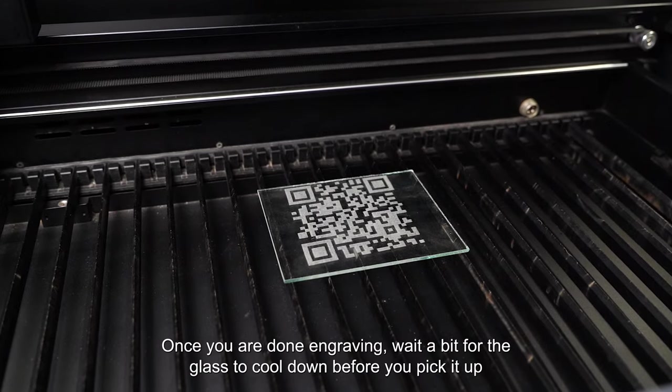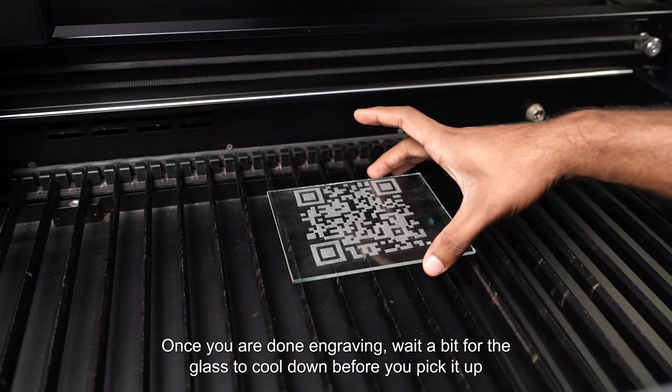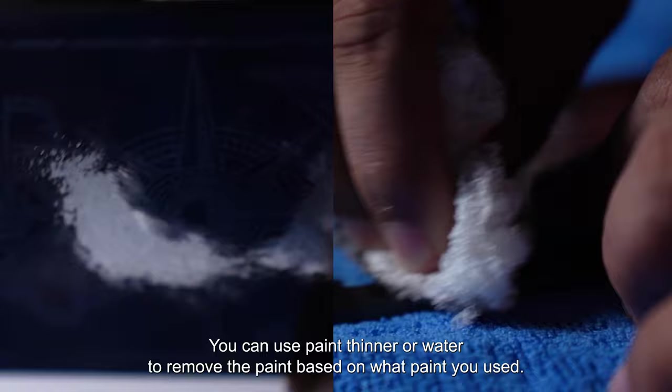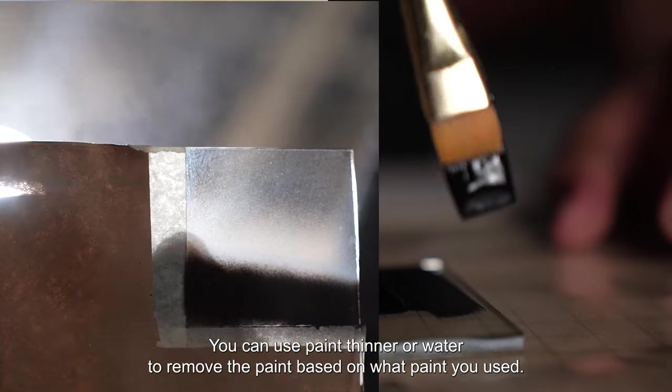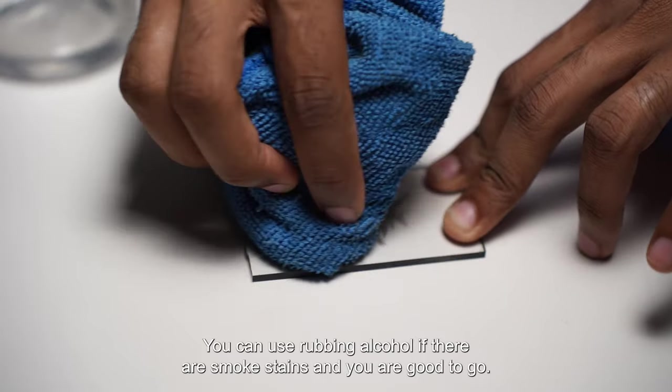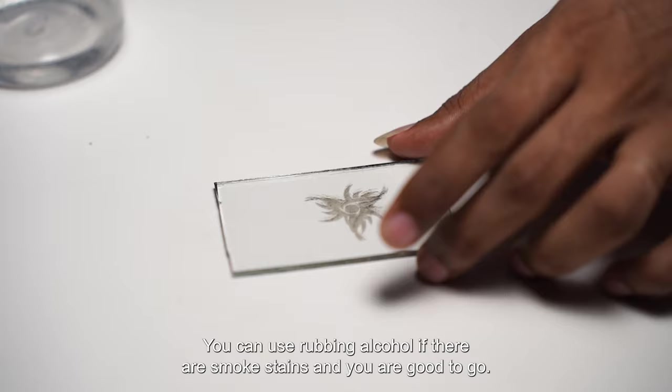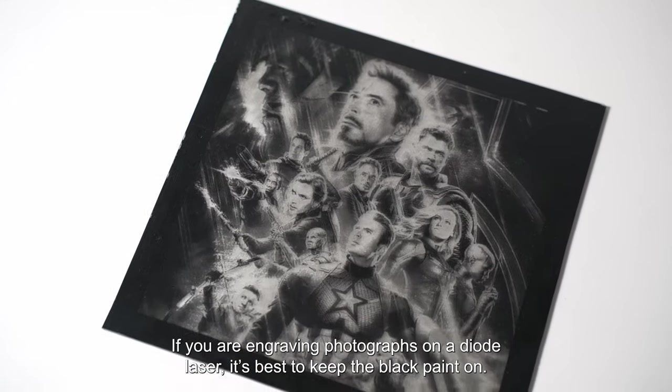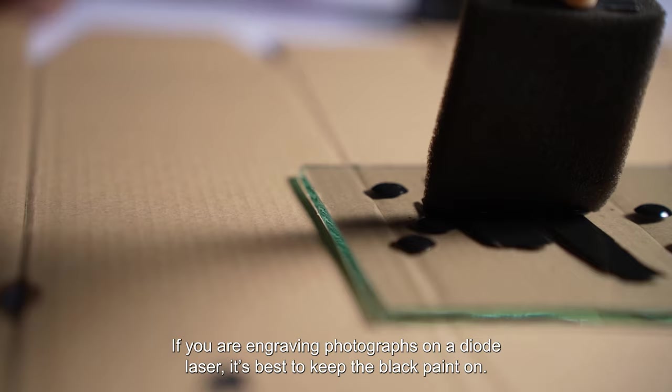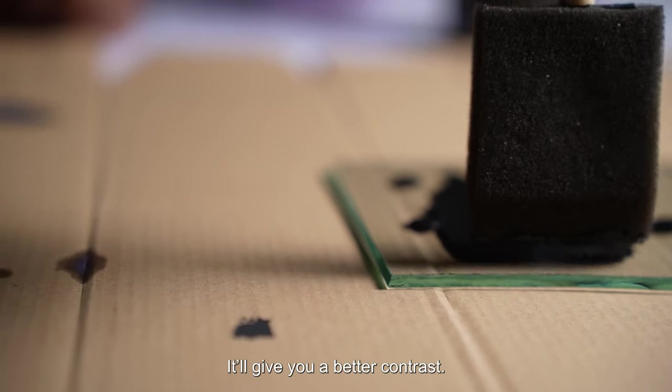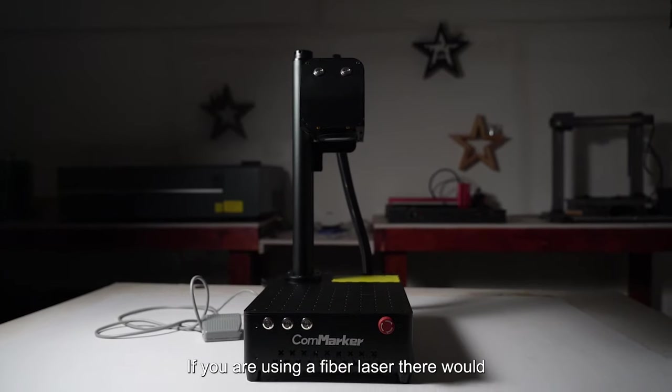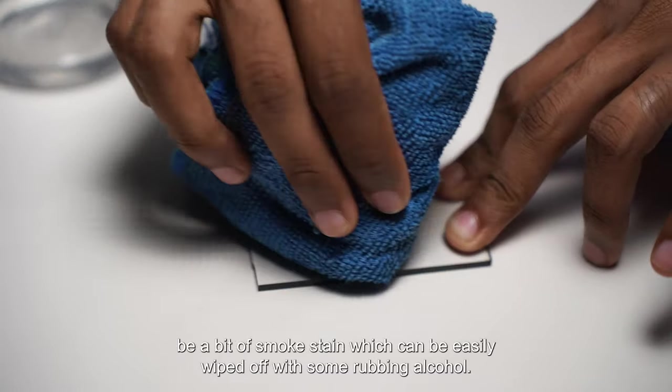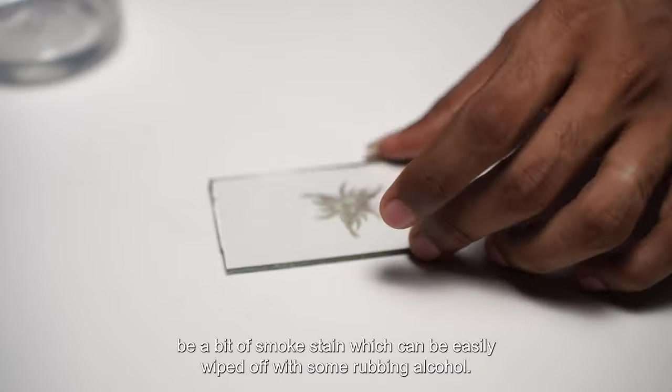Once you're done engraving, wait a bit for the glass to cool down before you pick it up. You can use paint thinner or water to remove the paint based on what paint you used. You can use rubbing alcohol if there are smoke stains and you're good to go. If you're engraving photographs on a diode laser, it's best to keep the black paint on - it will give you a better contrast. If you're using a fiber laser, there would be a bit of smoke stain which can be easily wiped off with some rubbing alcohol.